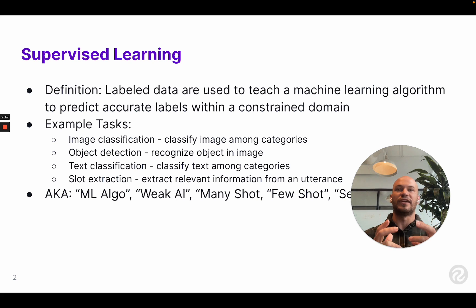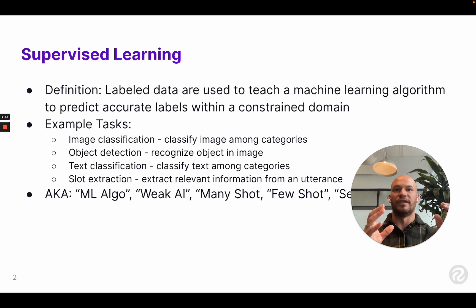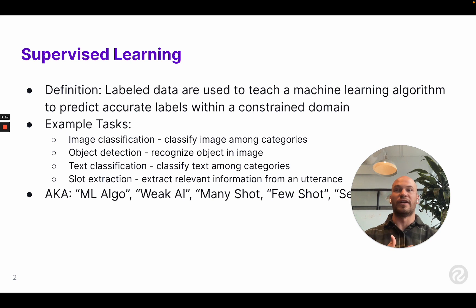This is where machine learning algorithms have really been shining in the fields of artificial intelligence — when you have a constrained area where you can provide a ton of representative data, so the algorithm can learn to map all the different possible inputs to outputs and achieve a very high level of accuracy, sometimes even above human level where something might be really repetitive, like looking for missing screws on phones going down a conveyor belt.